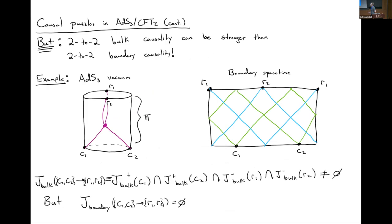The classic example is in the AdS3 vacuum: consider four boundary points, two on an early time slice and two on a late time slice, where c1 and c2 are antipodal to each other, r1 and r2 are antipodal to each other, separated by time π and rotated by 90 degrees. It's always possible in the bulk for causal signals to leave c1 and c2, meet at some bulk location, and then separate out to r1 and r2. However, no such thing is possible in the boundary spacetime — there is no two-to-two region where signals from c1 and c2 can converge and pass to r1 and r2.